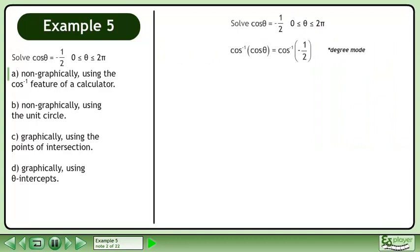Get theta by itself by taking the inverse cosine of both sides. The result is 120 degrees.